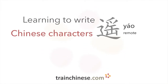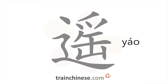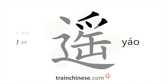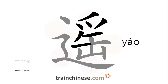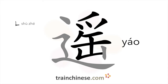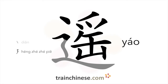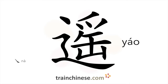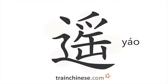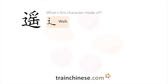Let's take a look at this character. This character has 13 strokes. Let's look at what goes into this character. The radical being used here means walk.